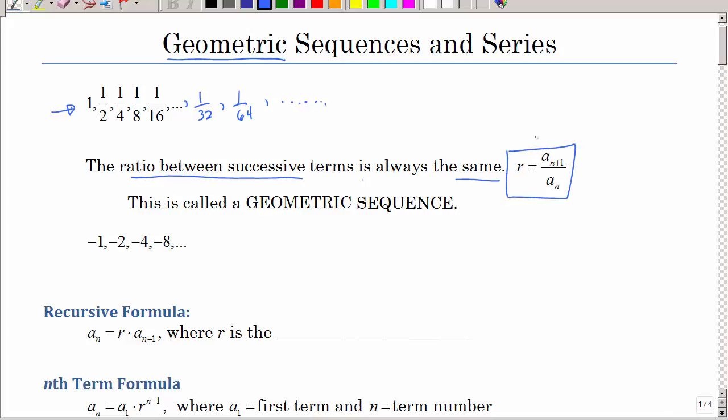That ratio is one term on the right divided by the term on the left. You can take any two terms and do that. If I take these, I would take one-sixteenth and divide it by one-eighth, and you would get one-half. That is called their common ratio.